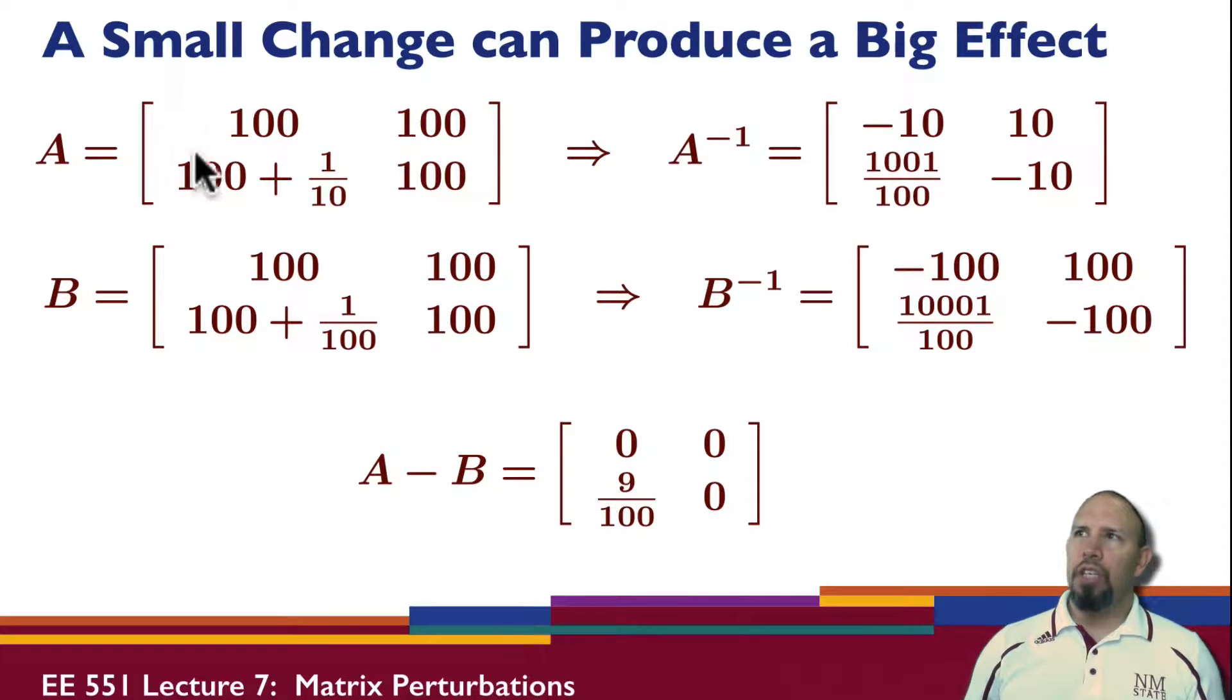So we have, for example, this matrix here. Notice that both of these columns are very close to each other. So this matrix is almost singular and the difference between these two columns is in this element, it's 1 over 10, whereas this is very similar also but instead of being 1 over 10, it's 1 over 100.